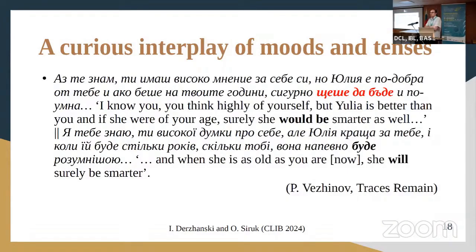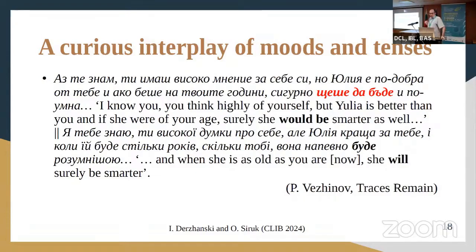In translation, the question of how to render these forms can be problematic sometimes, because Bulgarian seems to have an excessive wealth of forms. So what do Ukrainian translators of Bulgarian texts do to render the difference? Here's an interesting interplay of moods and tenses in the two texts, Bulgarian and Ukrainian, where the Ukrainian translator attempts to convey the meaning but says something strictly speaking different. This is part of a Bulgarian novel where a boy's father explains that a certain girl from the neighborhood is better than him, and if she were of your age, surely she would be smarter as well — 'she would be smarter,' expressed in the future in the past in Bulgarian.